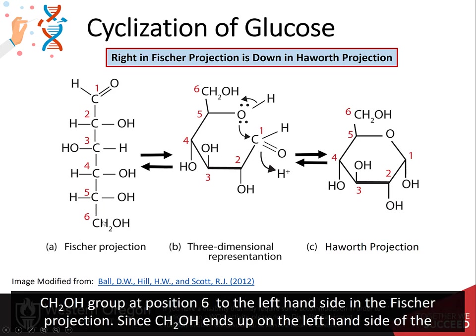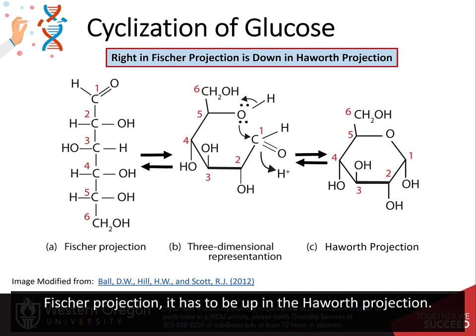Rotating carbon 5 shifts the CH2OH group to the left-hand side in the Fischer projection. Since the CH2OH group ends up on the left-hand side of the Fischer projection, it has to be in the up conformation in the Haworth projection.